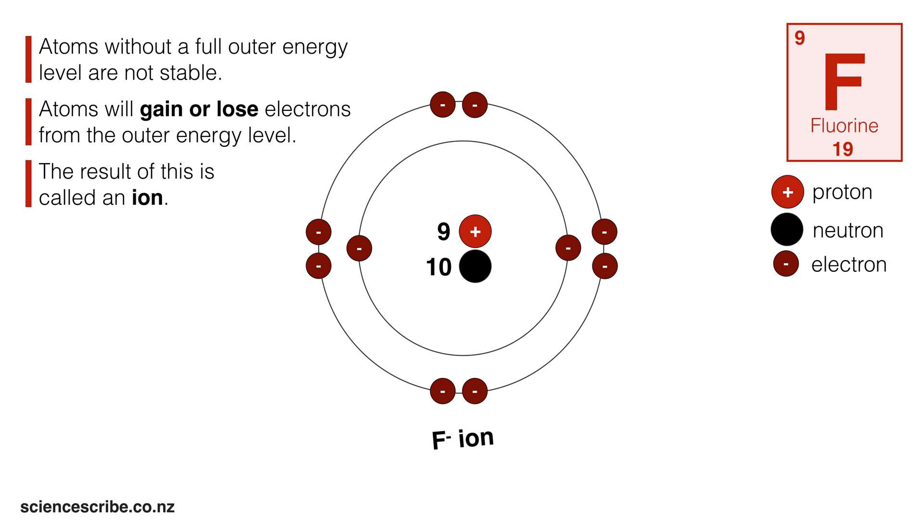You'll also notice that there's a little minus sign in the top right hand corner of the F. Where did this minus sign come from and what does it mean? The minus stands for a minus 1. You can see that I've got 9 protons, and I'm going to mark them as plus 9 because protons are positive. I've also got 10 electrons in total, which I'm going to mark as minus 10 because electrons are negative. This means in total I've got a minus 1 charge.